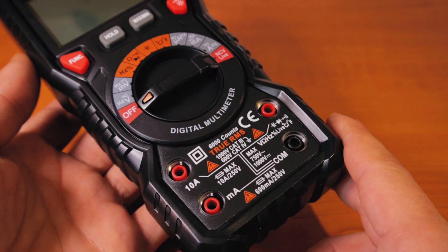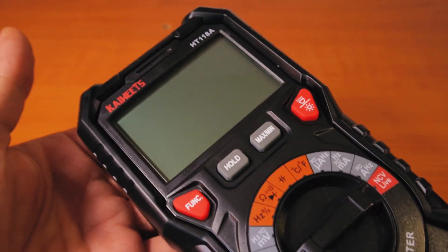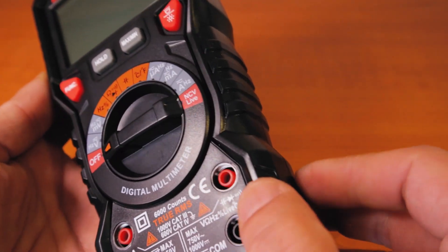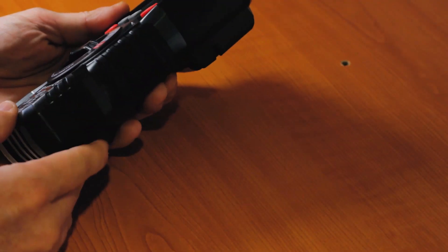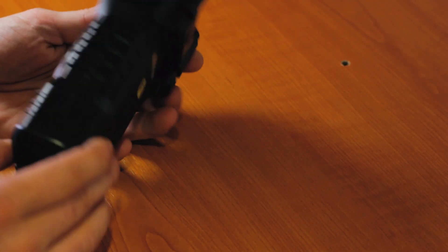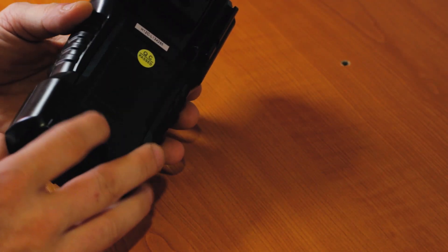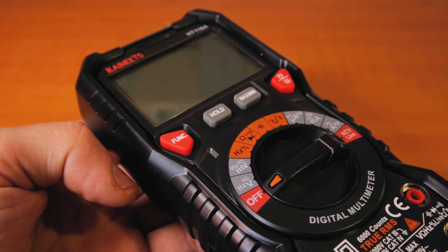Here we have the multimeter, very nicely built with a rubber-like protective cover, which I found very useful just in case you might drop it on the floor.